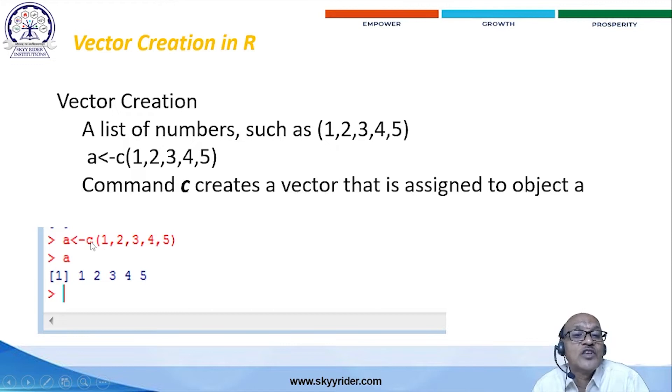The C is the command to create a vector. This is acting as one command. A is the one variable. A is equal to C, 1, 2, 3, 4, 5. Now, I want to run A, your output is max. This is the simple creation of the vector in R programming.